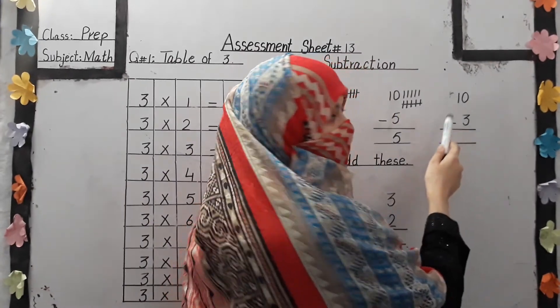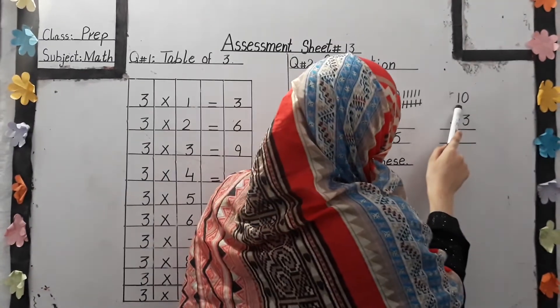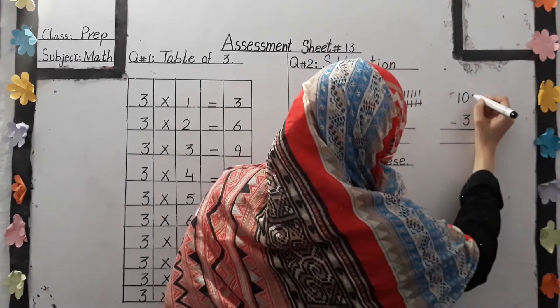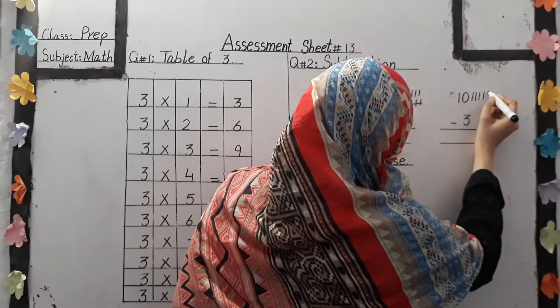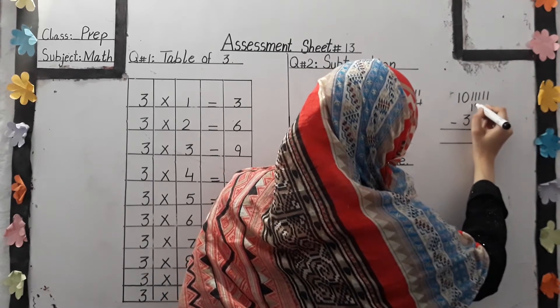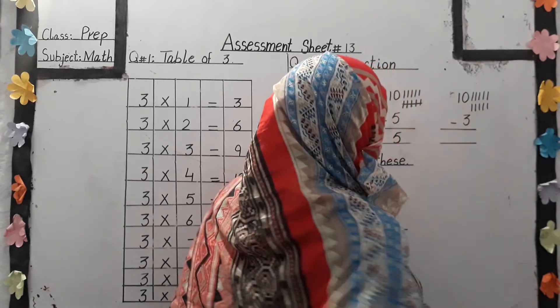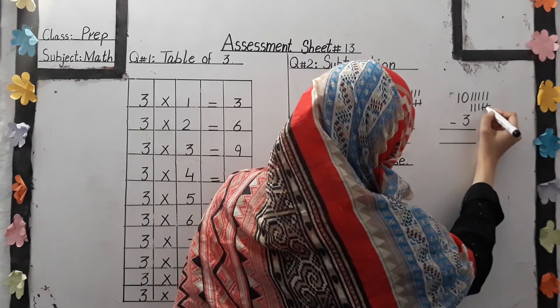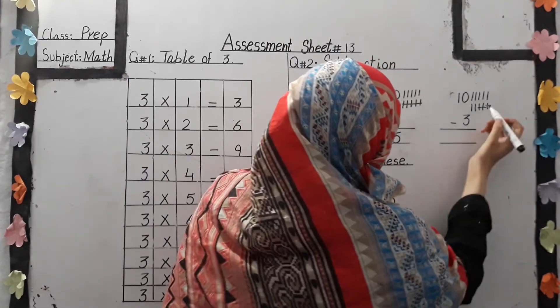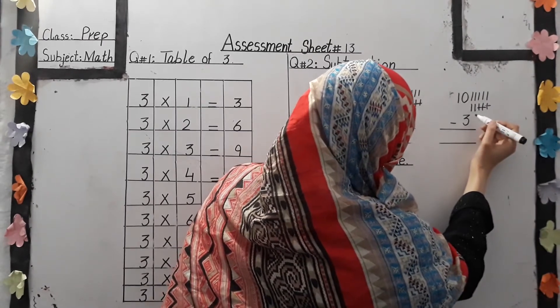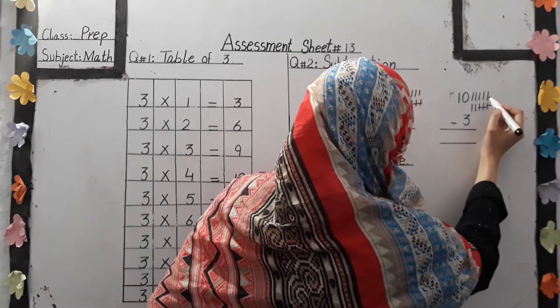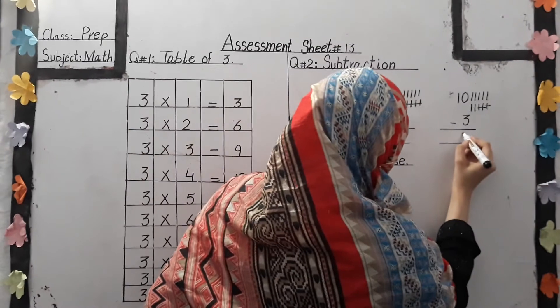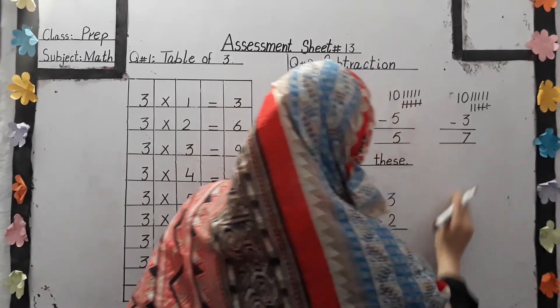Let's move to another question. Look at this. What is the number? This is 10. So we draw here 10 lines: 1, 2, 3, 4, 5, 6, 7, 8, 9, 10. Ok students, what is this? 3. So we cut 3 lines: 1, 2, 3. And count the remaining lines: 1, 2, 3, 4, 5, 6, 7. So the answer is 7.